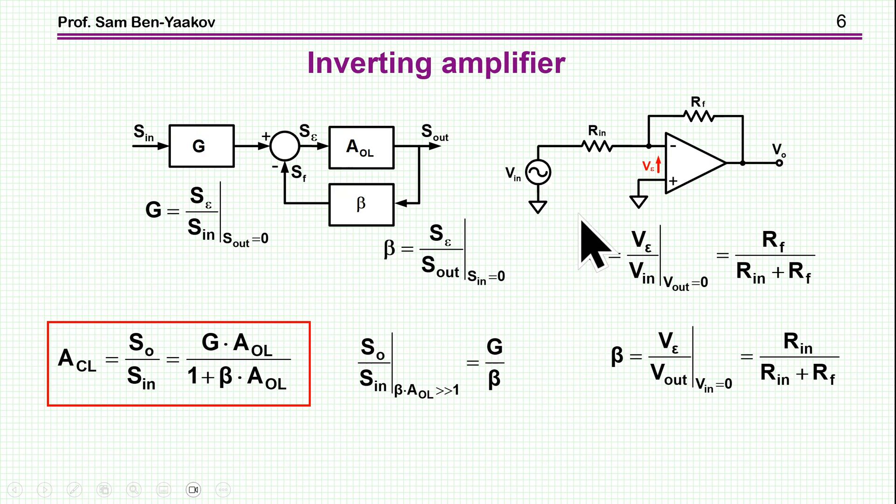So let's have a look now at the inverting amplifier. First thing to do is to find out what is G and beta in this case. Well, G is from the input to the summing junction when the output is zero. Then this is the transfer function from here to here, so this is this divider here. And beta is from the output to the same point when the input is now zero, and this will be this transfer function, this divider here, R in over R in plus R f.